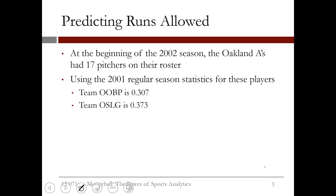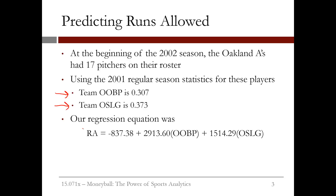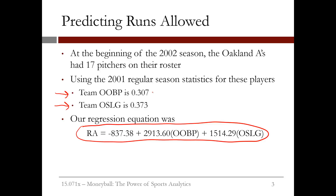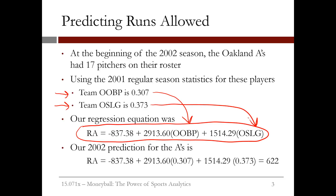Similarly, we can make a prediction for runs allowed. At the beginning of the 2002 season, the Oakland A's had 17 pitchers on their roster. Using the 2001 regular season statistics for these players, we can estimate that team opponent on-base percentage will be about .307 and team opponent slugging percentage will be about .373. Our regression equation to predict runs allowed was as follows. By plugging in .307 for opponents on-base percentage and .373 for opponents slugging percentage, we predict that the 2002 Oakland A's will allow 622 runs.